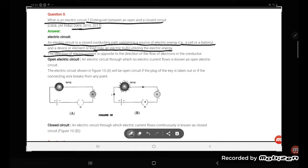The direction of electric current is opposite to the direction of flow of electrons in the conductor. So this is what the closed circuit is.